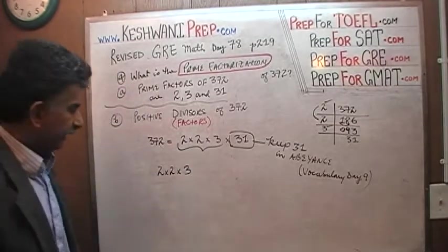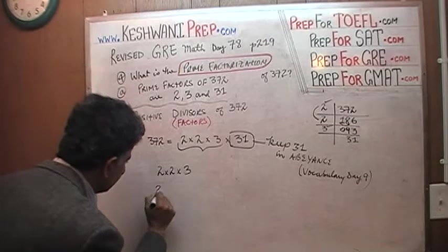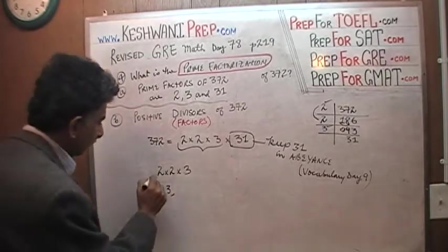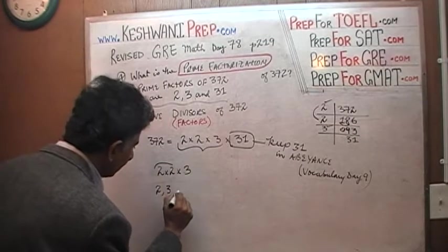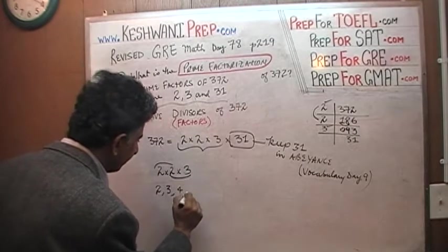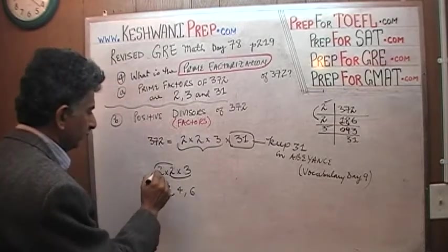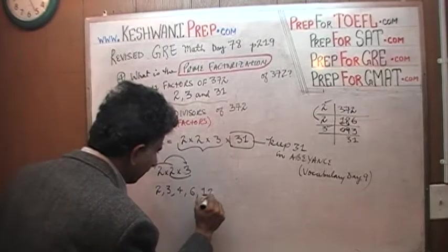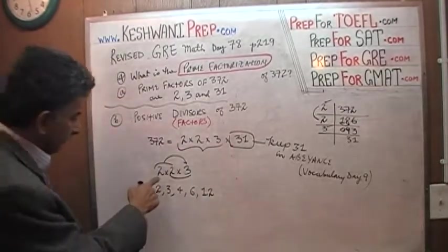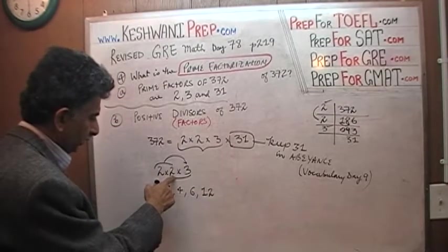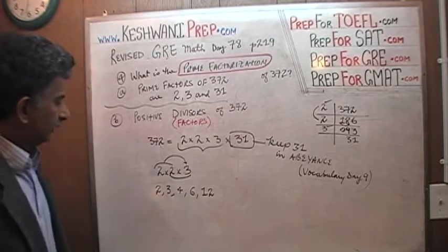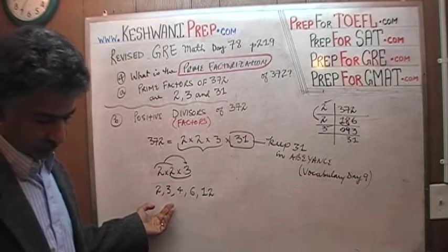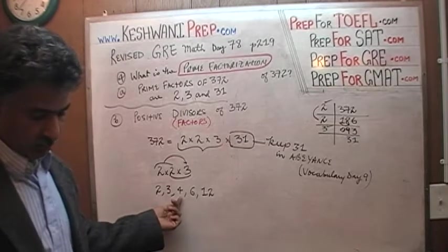To find the factors of 372, the easy factors. Don't worry about 31 later. 2 times 2 times 3. What factors do you find here? Obviously, I see a 2, I see a 3. Now let's do the pairs. I see a 4, and then I see a 6. And then it will be 4 times 3, which is 12, which of course is the quantity itself. 2 times 2 times 3 is 12. Those are the factors of 12. We have 2, 3, 4, 6, and 12.